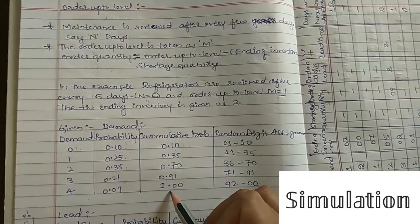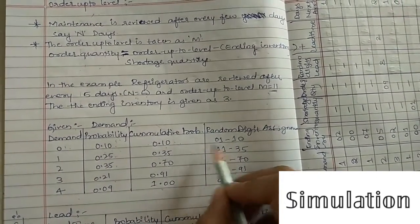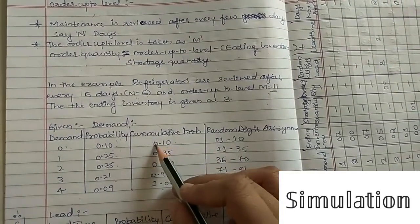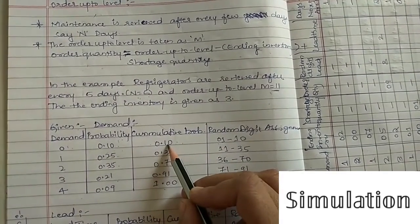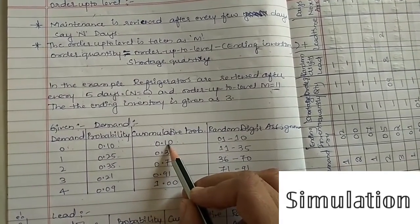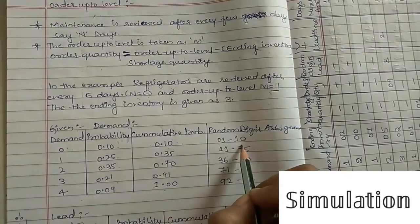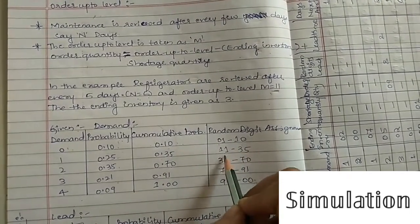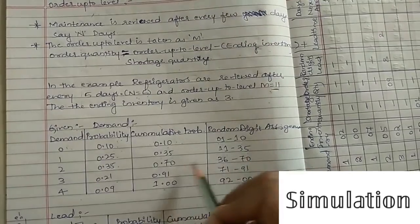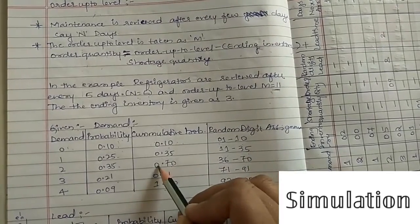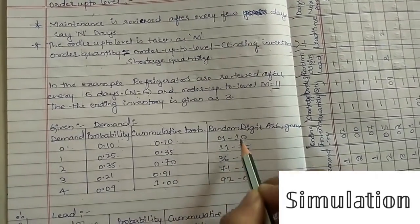Next, we find the random digit assignment. Starting from 1, the right-hand side of the decimal gives the range width — so 0.10 gives 1 to 10, next is 11 to 35, then 36 to 70, and so on for each cumulative probability value.